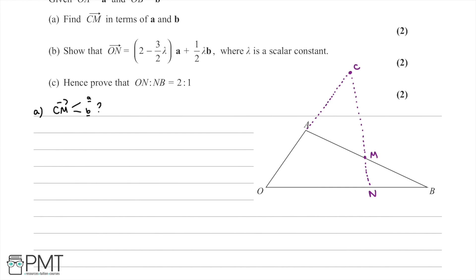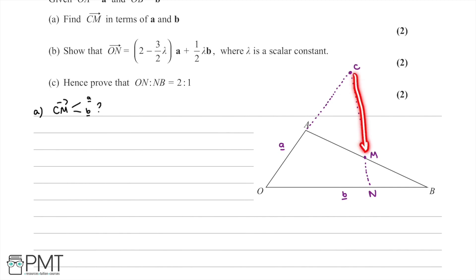Now we need to think about what the question is asking us to do. We're asked to go from C to M and write that in terms of a and b. We're also told that O to A can be denoted as a and that O to B can be denoted as b. So we need to write the vector CM in terms of a and b.